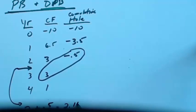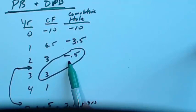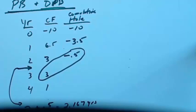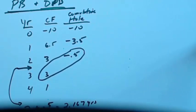That equals 2.167 years. It takes 0.167 years to recover the remaining $0.5, assuming $3 comes in evenly throughout the year. So 2.167 years is the payback for Project X.